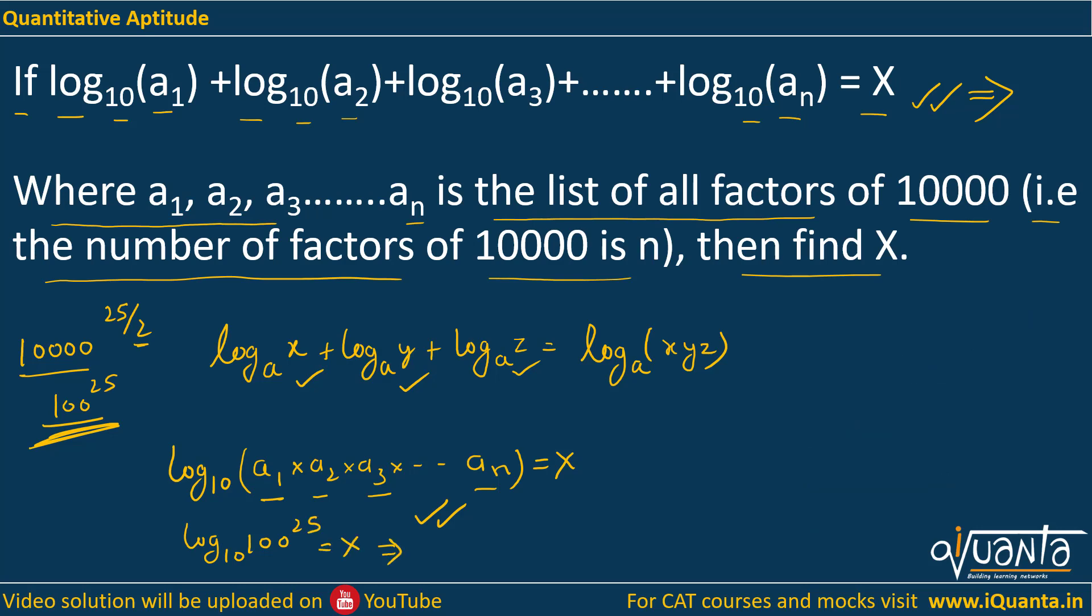To simplify this, we use another log property. If we have logₐ(aˣ), this becomes x. Another useful property is logₐ(bⁿ) = n·logₐ(b). We have log₁₀(100²⁵). We can write 100²⁵ as 10⁵⁰. So this becomes log₁₀(10⁵⁰). Since logₐ(aˣ) = x, we get log₁₀(10⁵⁰) = 50.